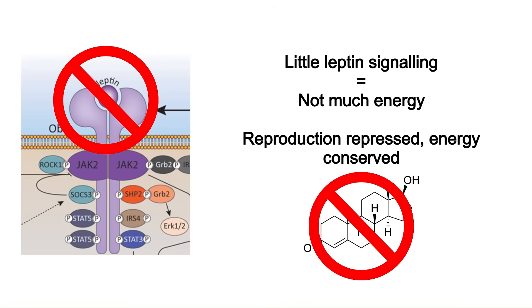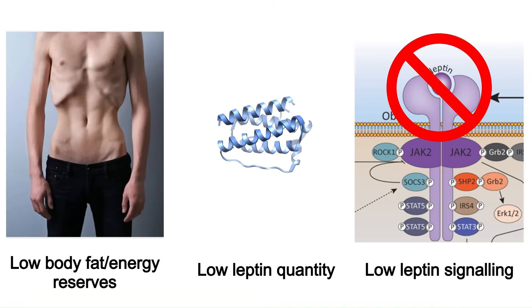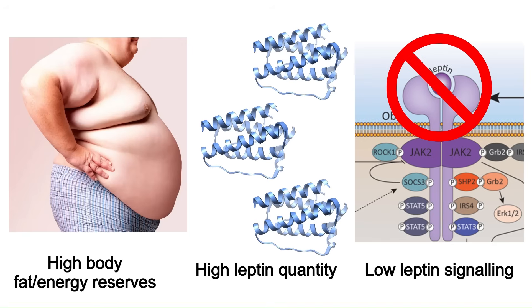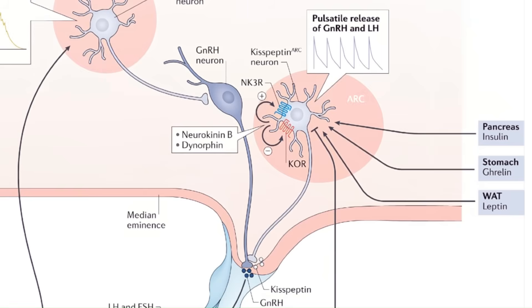Leptin is a hormone released by white adipose tissue. It binds to leptin receptors in the brain, telling it how much energy the body has available. Lots of leptin signaling means the body is free to put energy into reproduction and testosterone. Small amounts means reproduction should be repressed and energy directed toward survival. However, obese people have lots of leptin but their receptors are often insensitive, causing leptin resistance, making them feel hungry despite having ample energy stored.